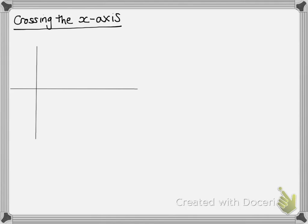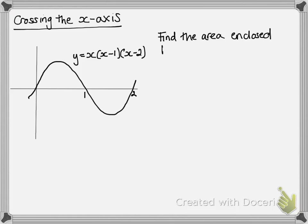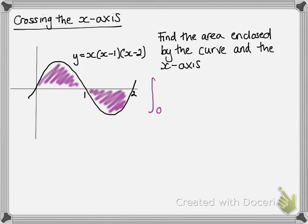So, what happens if our area actually crosses over the axis? Something like this. So, find the area enclosed by the curve and the x-axis. So, we would go ahead and do our 0 to 2, do the integration,